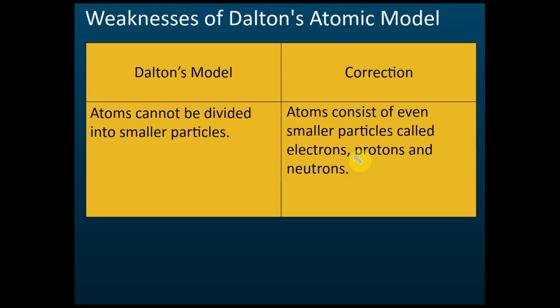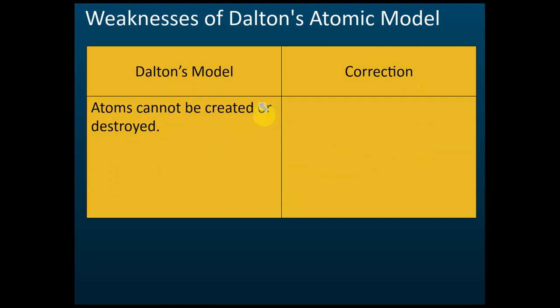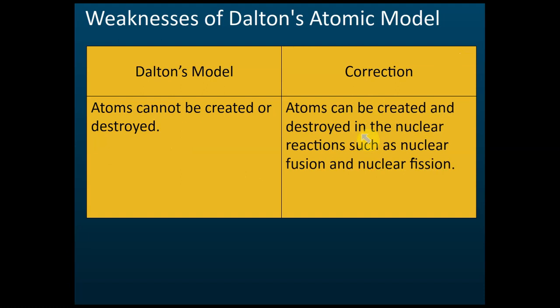Atoms consist of even smaller particles called electrons, protons, and neutrons — that is the first weakness of Dalton's model. The second weakness: Dalton said atoms cannot be created or destroyed, but later scientists found that is not true. We can create and destroy atoms in nuclear reactions, such as nuclear fusion and nuclear fission. Nuclear fusion is the reaction where we combine two or more atoms together to form a new one, while nuclear fission is where we take one atom and break it into two.